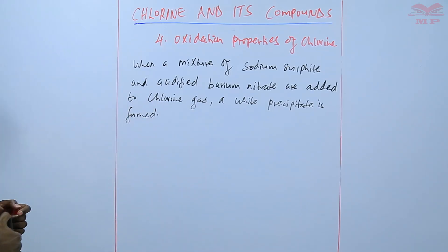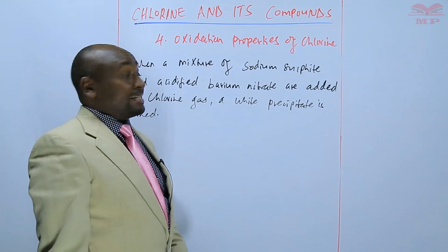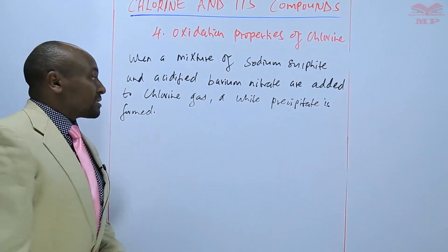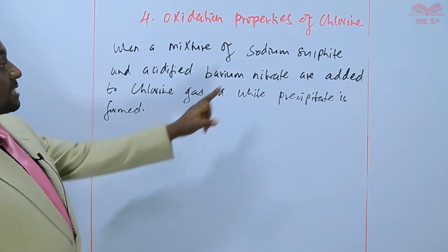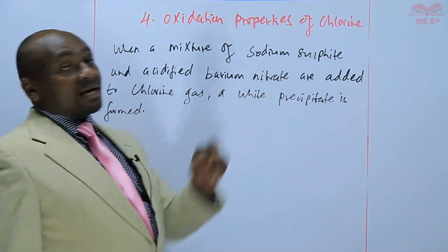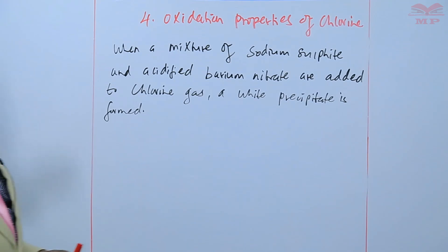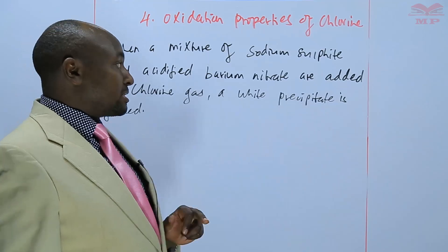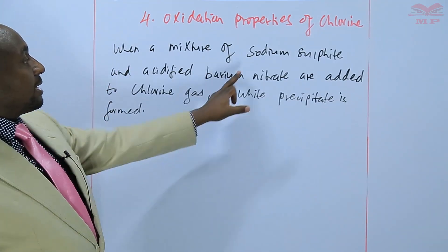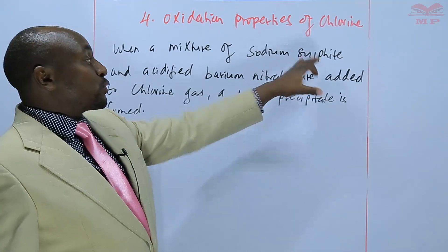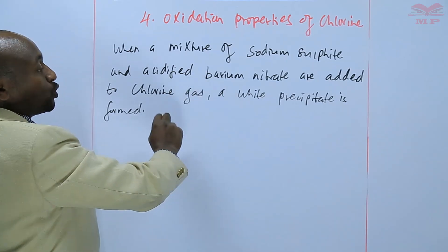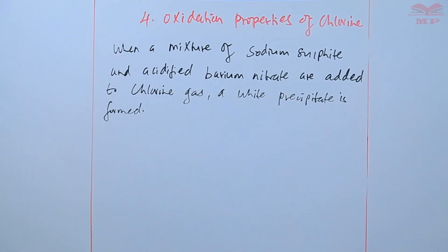In this case, we have an example whereby a mixture of sodium sulfite and acidified barium nitrate are added to chlorine gas, and a white precipitate is formed. What happens here is that the sulfite in the sodium sulfite is oxidized to a sulfate, and that leads to the formation of a white precipitate. When sodium sulfite is oxidized to sodium sulfate, the sulfate reacts with the barium nitrate to form a white precipitate of barium sulfate.